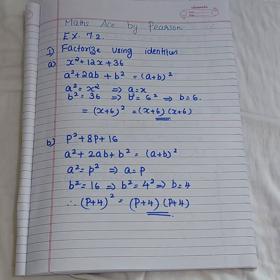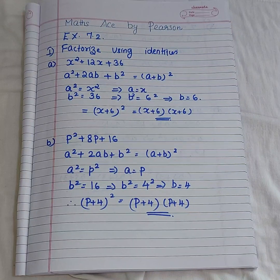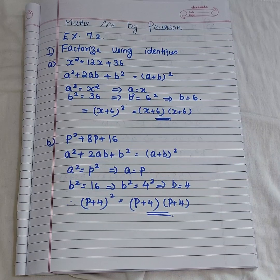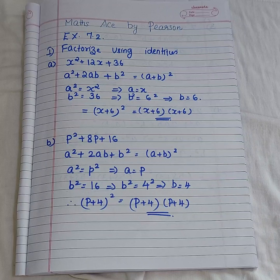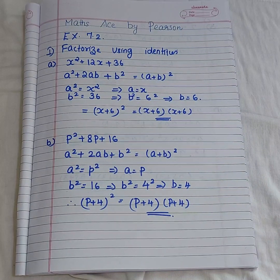Hi students, today we are going to discuss the questions from your textbook Maths by Pearson, Exercise 7.2. The chapter name is Factorization. Here we are going to do the first part. Our first question is: factorize using identities.